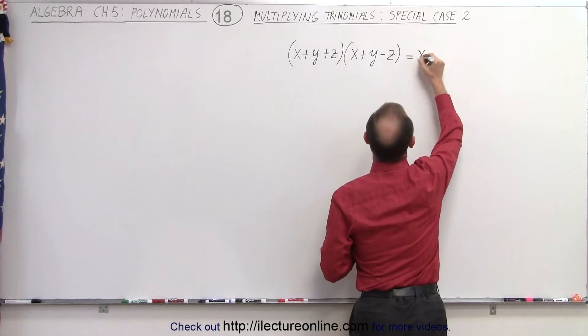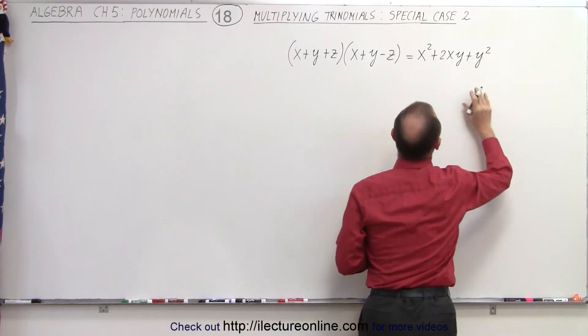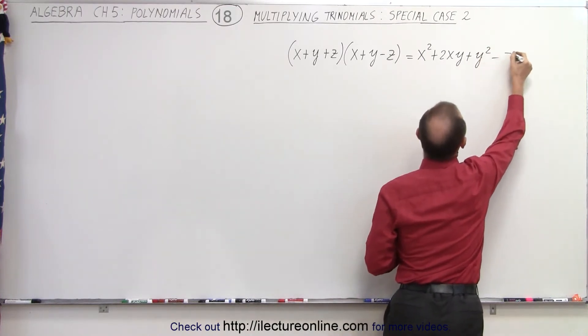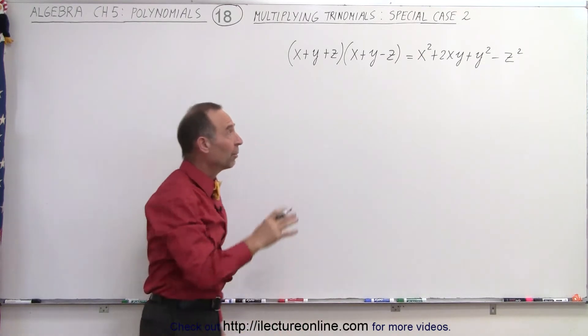So you end up with x squared plus 2xy plus y squared, and then the fourth term will be a minus z squared. Notice that makes it quite easy to come up with a solution.